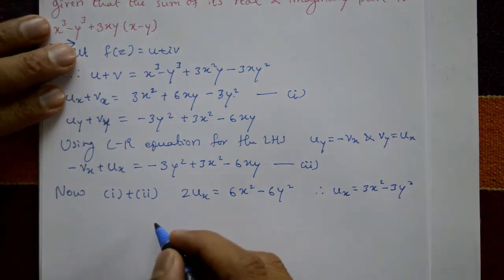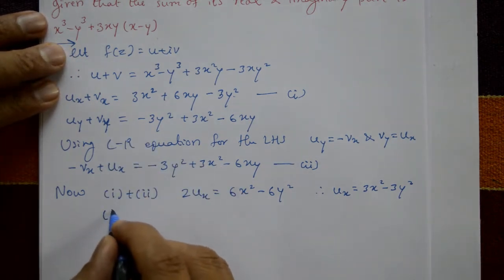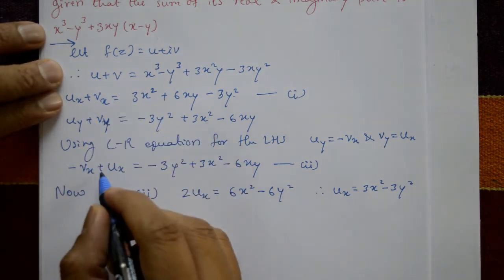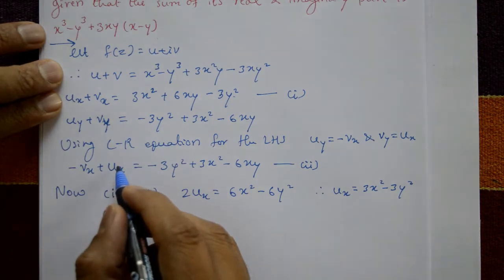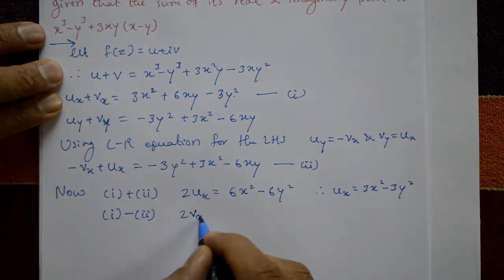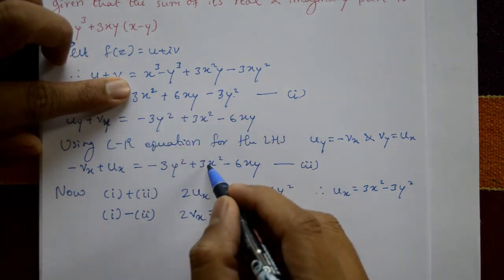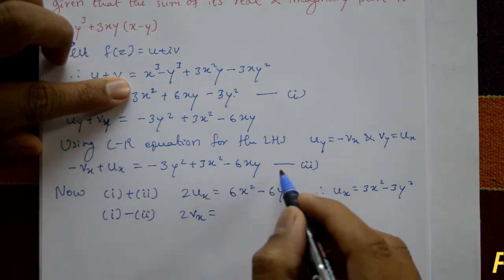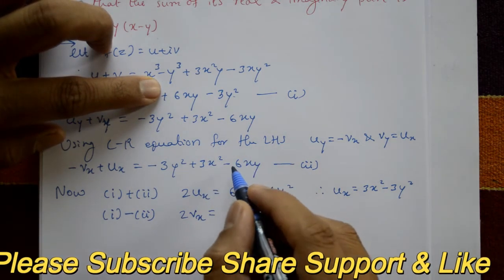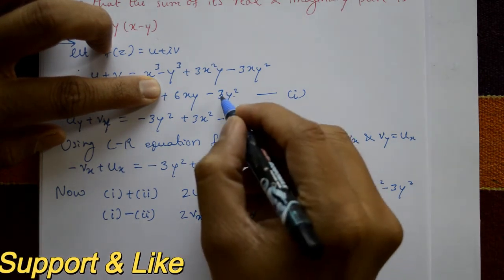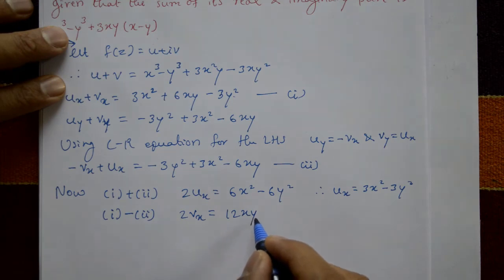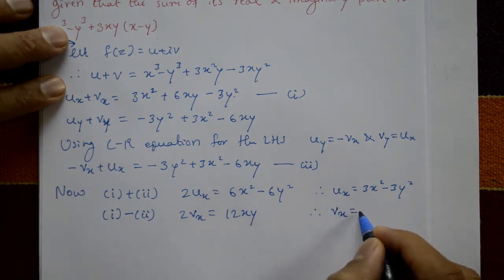Subtracting equation 2 from equation 1: the ux terms cancel, giving 2·vx = 12xy. Dividing by 2, we get vx = 6xy.